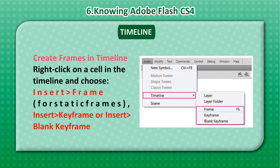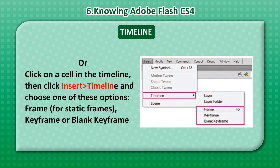To create frames in the timeline, right-click on a cell in the timeline and choose Insert Frame for static frames, or Insert Keyframe or Insert Blank Keyframe. Alternatively, click on a cell in the timeline, then click Insert, then Timeline, and choose one of these options: Frame for static frames, or Keyframe or Blank Keyframe.